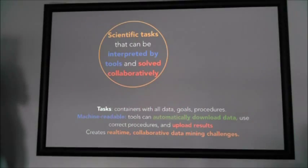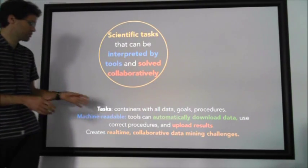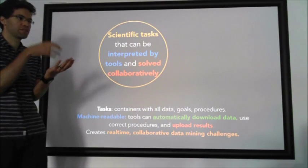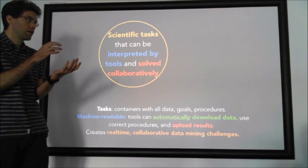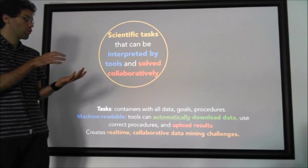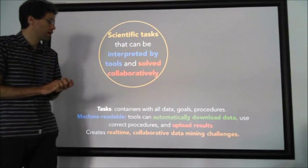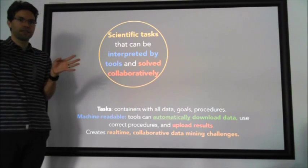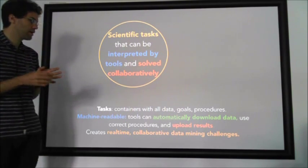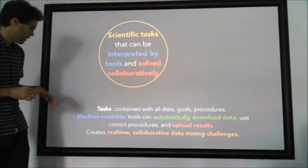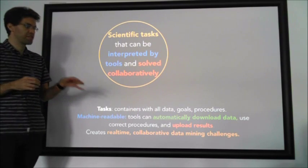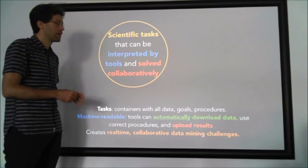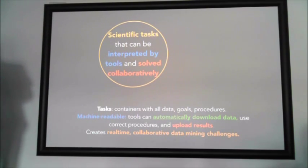Next to datasets, we have tasks. Tasks are basically containers which have the data and a description of what you should do to the data. If you do classification, they specify which train/test samples to use, what you should upload — should you upload the model, should you upload the predictions — and all procedures to follow. Tasks are machine readable, so tools can just take a task, analyze it, download the necessary data, run algorithms on it, and automatically upload all results back to the server. Interestingly, this creates a real-time collaborative challenge: if you have a problem, you can have many people try to build the best model, and OpenML keeps track of who does the best result solving this problem.